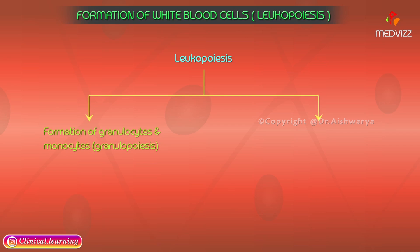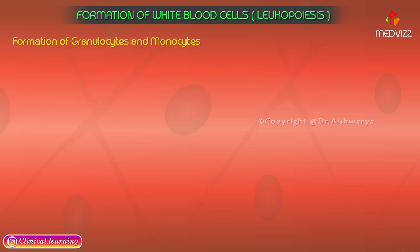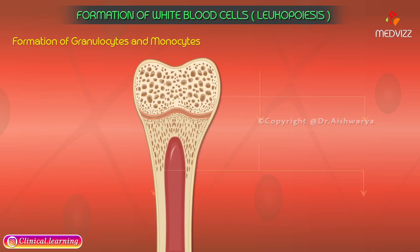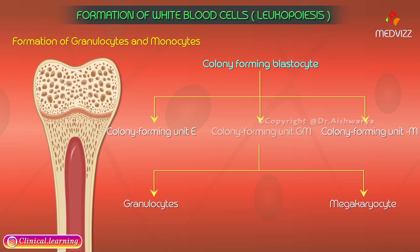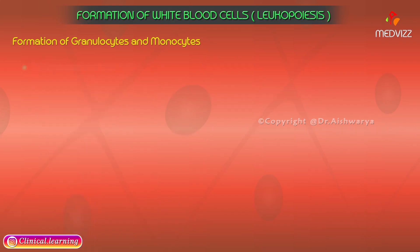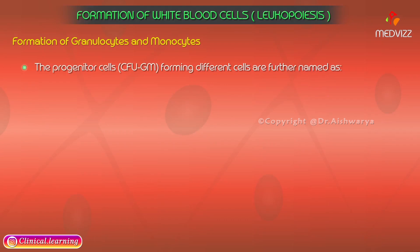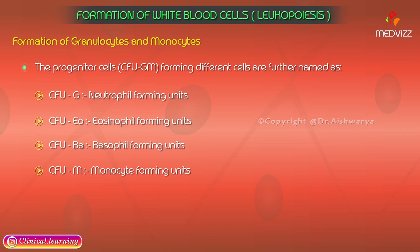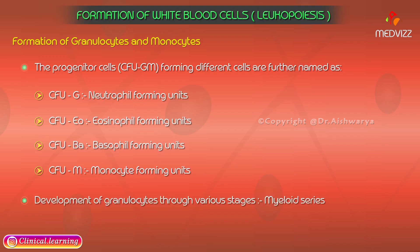Granulocytes and monocytes are formed in the bone marrow from the colony forming unit called CFU-GM (colony forming unit granulocytes and monocytes). The progenitor cells forming the different cells are named as CFU-G for neutrophil forming units, CFU-EO for eosinophil forming units, CFU-BA for basophil forming units, and CFU-M for monocyte forming units.